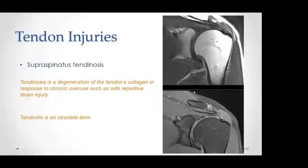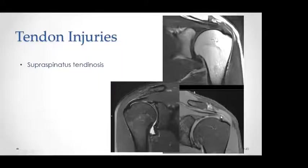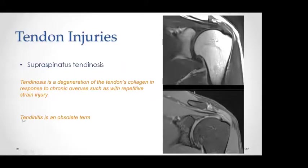Supraspinatus tendinosis: a normal supraspinatus tendon appears homogeneously hypointense. In tendinosis, there is increased signal intensity within the tendon matching between the coronal PDFS and the coronal T2 — this confirms tendinosis rather than artifact. We no longer use the term tendinitis because pathologically there is no inflammation in the tendon; it is an obsolete term.